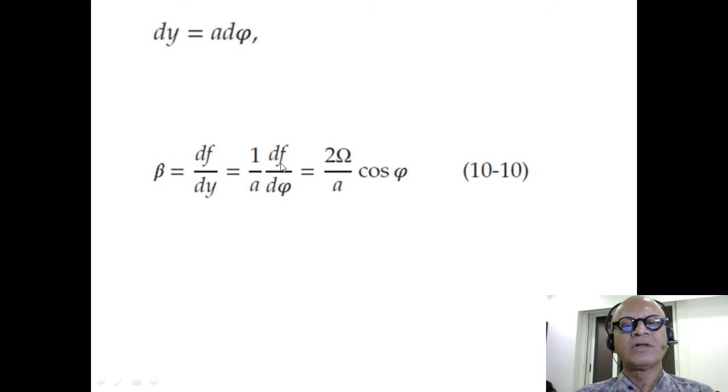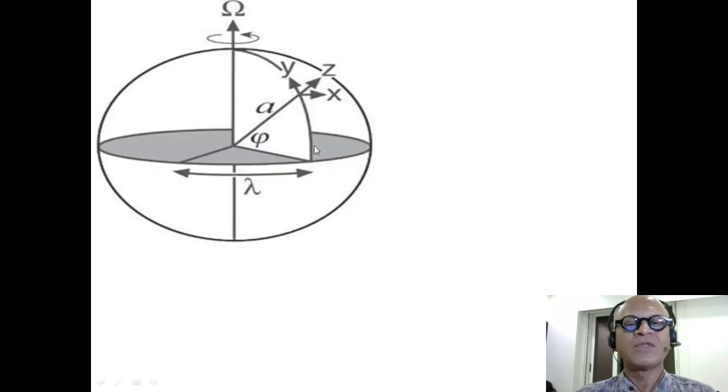That is going to give us 2 omega over A cosine phi. F was what? F was omega sine phi, 2 omega sine phi. So all we did was here replace df/d phi with 2 omega cosine phi by taking the derivative of F in terms of its full form, 2 omega sine phi. Okay?